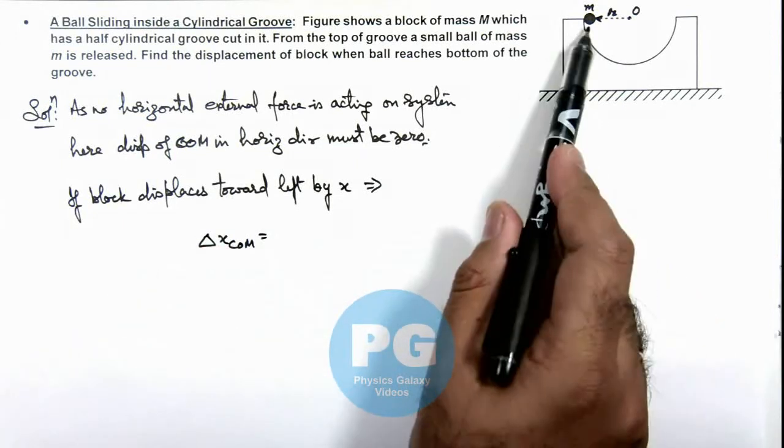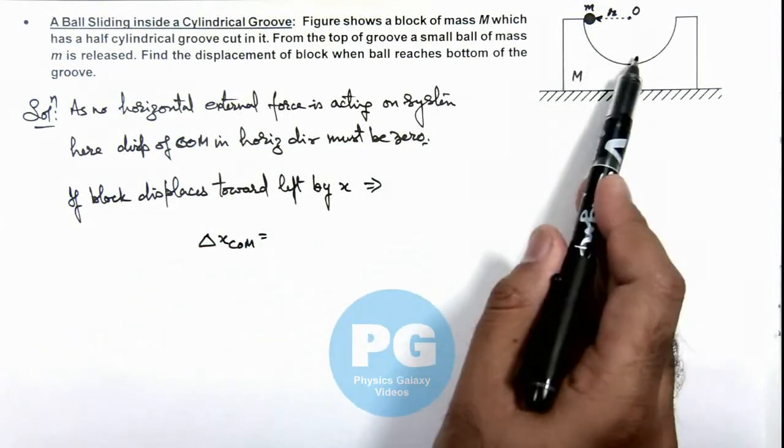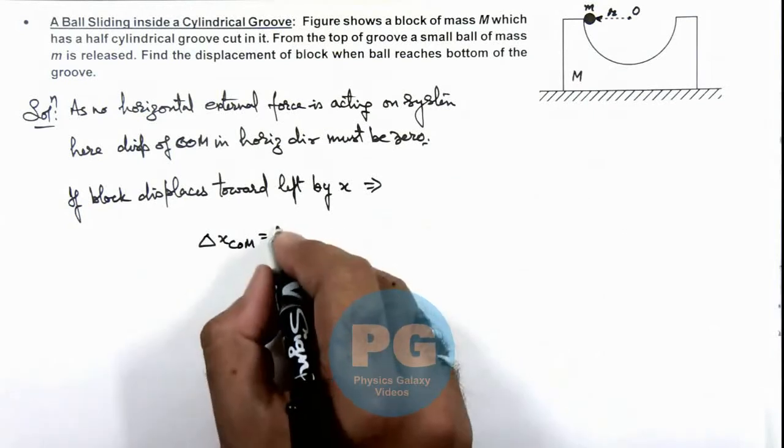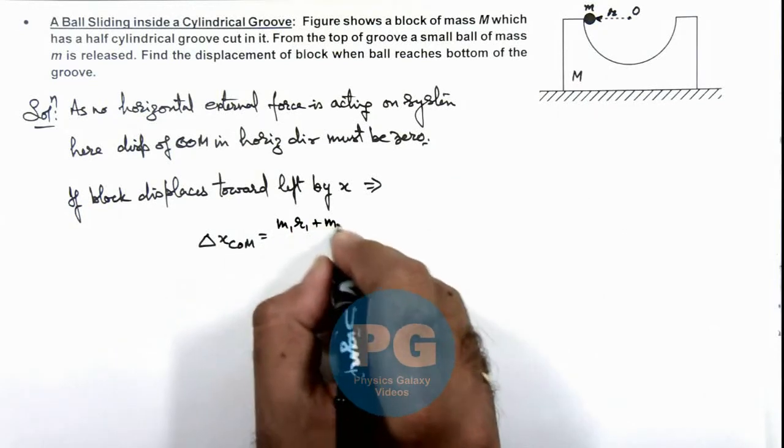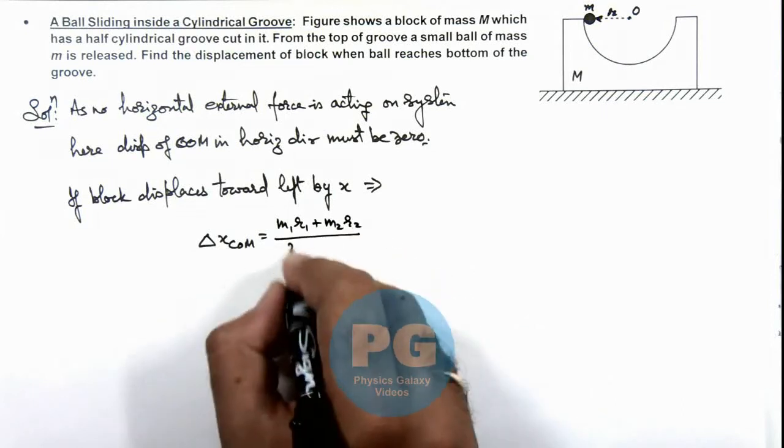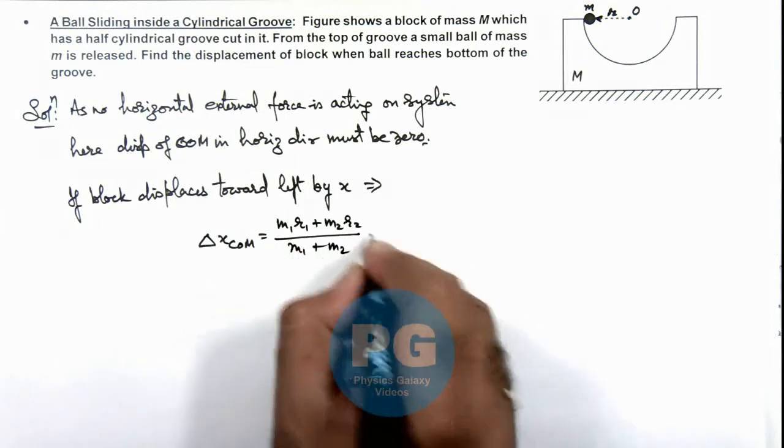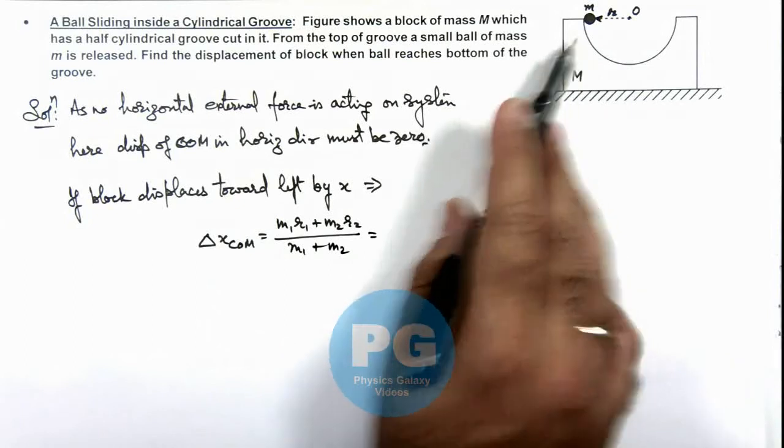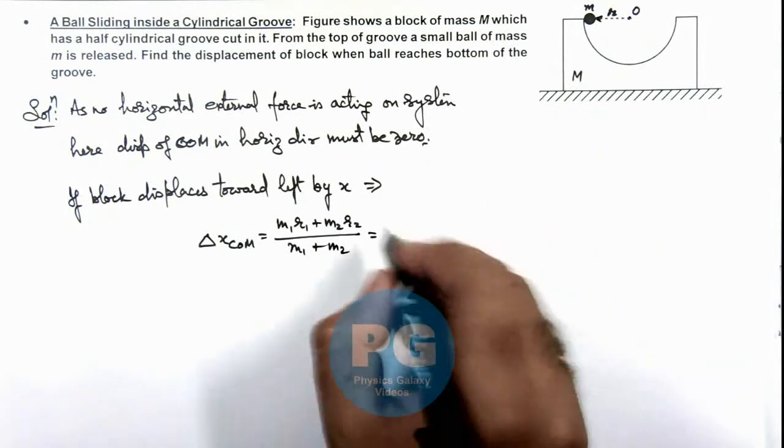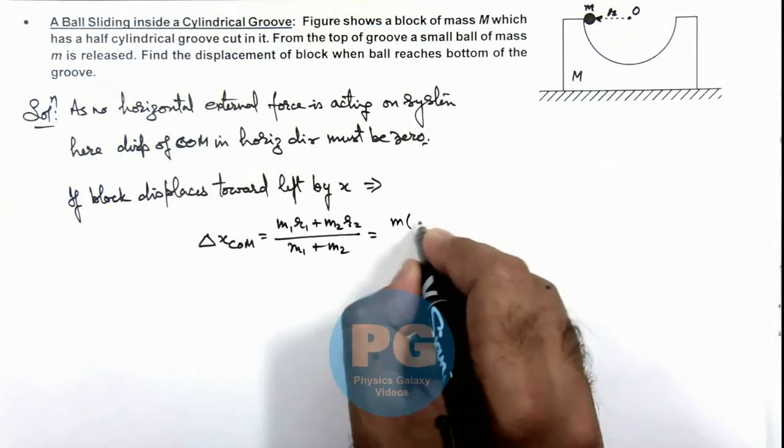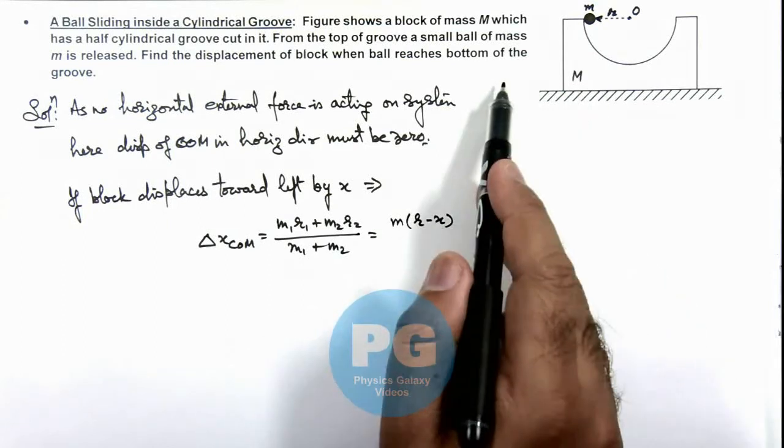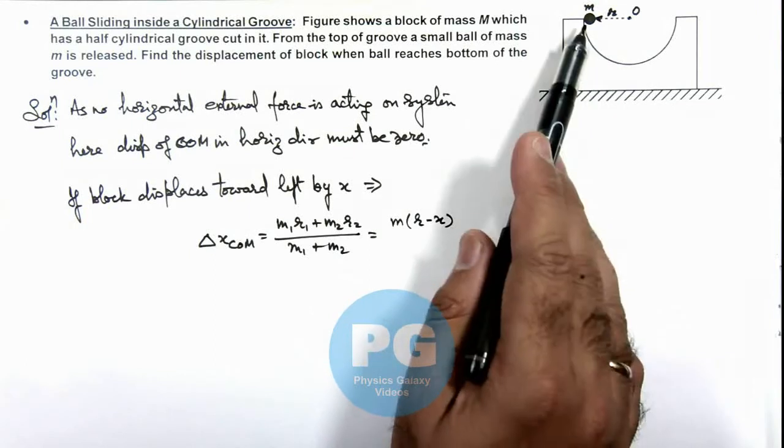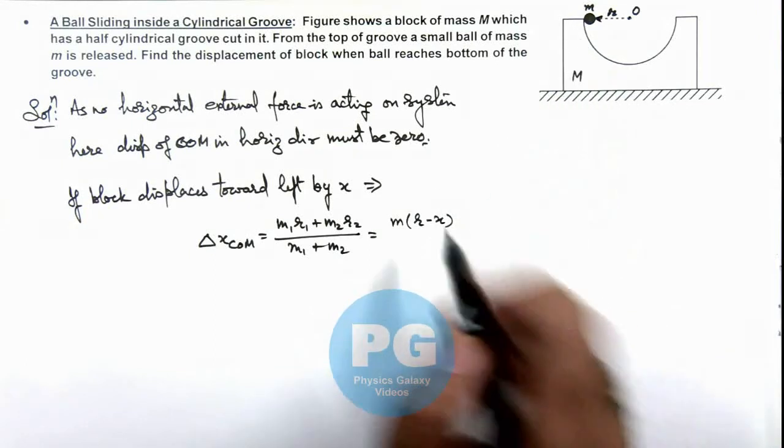The ball goes toward right by a distance r. So we can make use of the relation m1r1 plus m2r2 upon m1 plus m2. The horizontal displacement of ball toward right is m multiplied by r minus x, because the block displaces toward left by x, so net displacement of ball toward right will be r minus x.